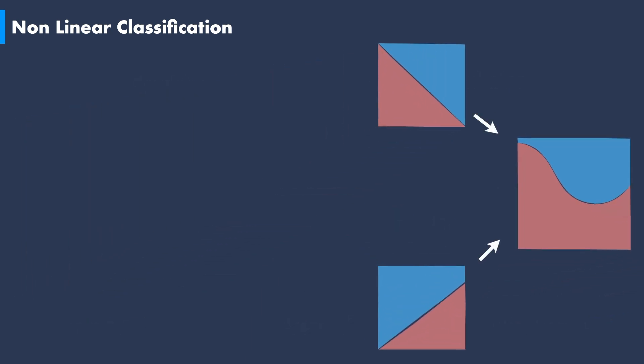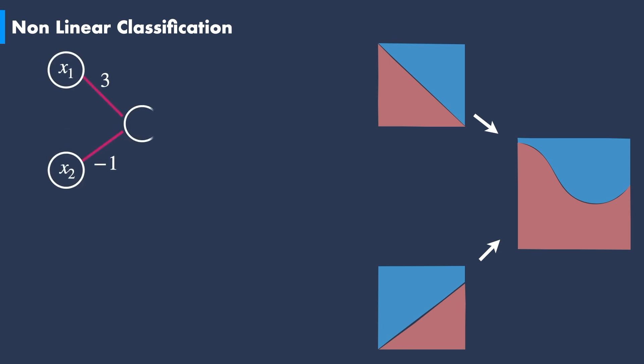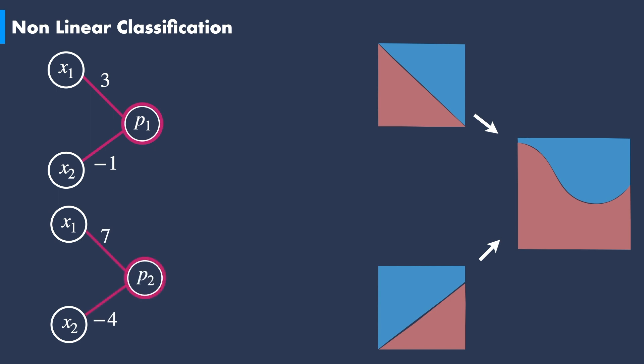We can now visualize this fact in terms of combined perceptrons. Each linear decision boundary can be represented with a perceptron model. For the sake of demonstration, let us suppose we only consider two linear hypotheses. Every perceptron will have specific values of the weights and will give a probability by summing the x1 and x2 terms and applying the activation function. Then both outcomes will be combined into a single new perceptron with new weights and its activation function. This outcome can now account for a non-linear decision boundary.